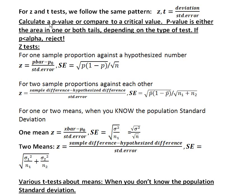Whenever you see a z or a t-test, you're going to see a pattern emerge where the z or the t that you're calculating — on the top of the formula, in the numerator — you are going to see some sort of deviation, some sort of difference between two numbers. And then on the bottom of the formula, you're going to see some sort of standard error. A standard error is a common difference between what samples will give you and what your null hypothesis says, or another way of thinking of it is it's a common difference between a sample estimate and the truth, assuming the null hypothesis represents the truth.